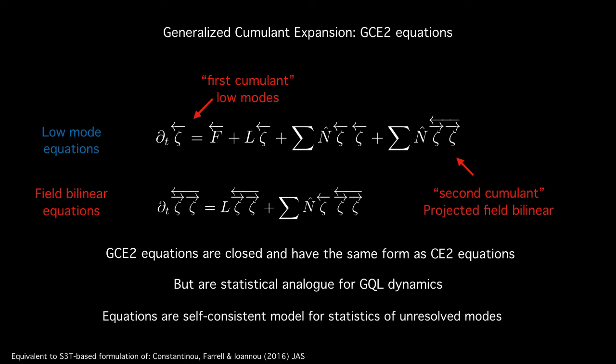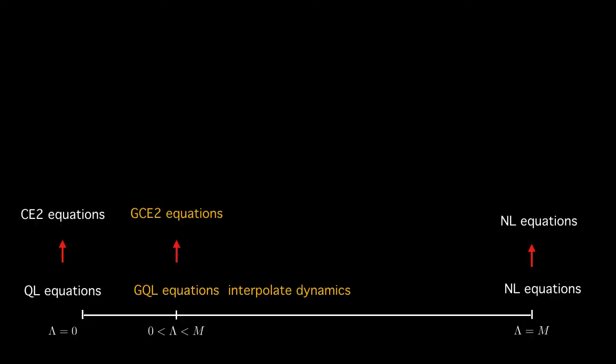So a similar formulation has been put forward by Constantinou, Farrell, and Ioannou in their S3T based framework. So here is a summary. On the dynamical side, GQL equations interpolate between QL and NL using the cutoff, a wave number in zonal modes, lambda. So the statistical equivalent, GCE2, interpolates between CE2 and NL. So our quest is now complete. We have found an adequate statistical theory for turbulent zonal jets.